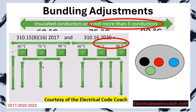Let's imagine that we have a piece of conduit here and we pulled in a black, red, blue, and an equipment grounding conductor. What this table is saying is that those ampacity values listed in this table are true as long as you have not more than three current carrying conductors in a cable, pipe, or raceway. If you do have more than that, then we have to do what's called a bundling adjustment.